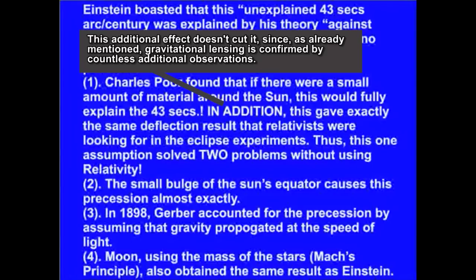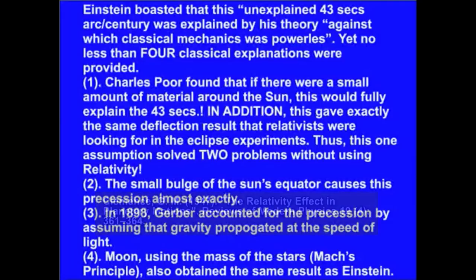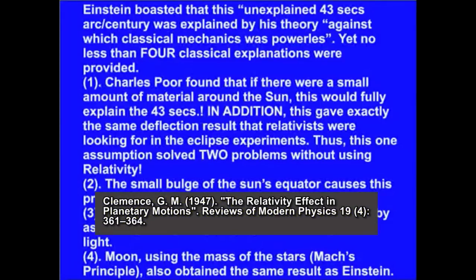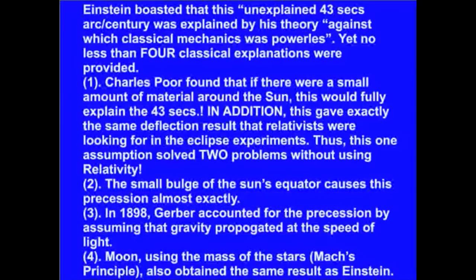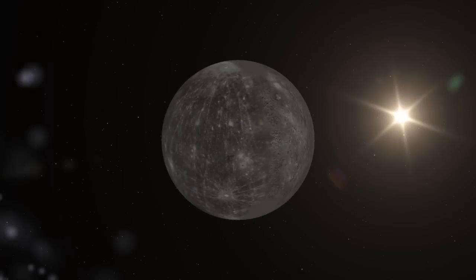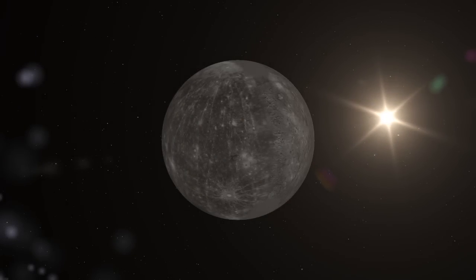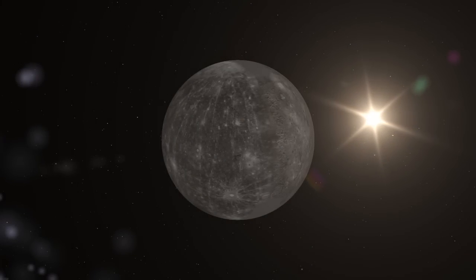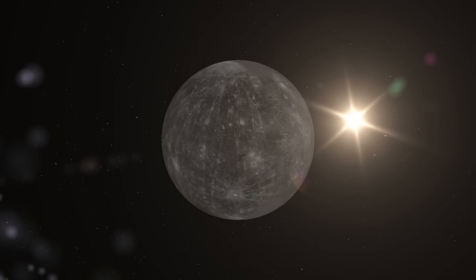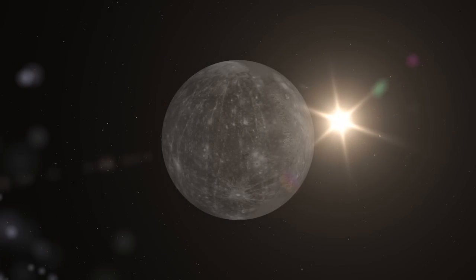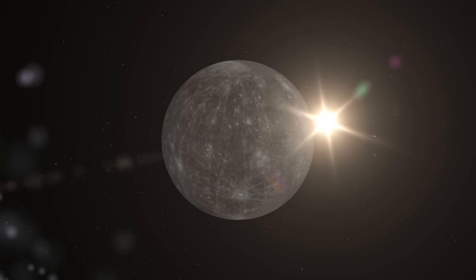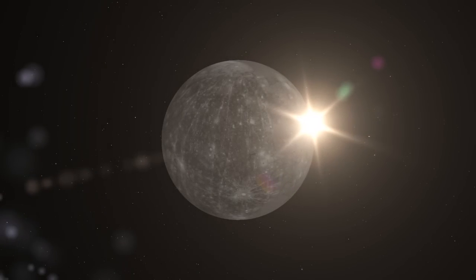Secondly, the small bulge of the Sun's equator causes this precession almost exactly. The reason this was a problem is the fact that this doesn't account for it. The 43 arc seconds per century are what cannot be accounted for. The solar bulge has already been taken into account. Thirdly, in 1898, Gerber accounted for the precession by assuming that gravity propagated at the speed of light. Gerber calculated the speed of gravity by assuming that there was a relationship between this speed and Mercury's precession rate. He could not explain why gravity should have a finite speed or why this should have anything to do with Mercury's rate of precession. It was a completely unjustified assumption that just happened to be correct. Einstein provided the justification.